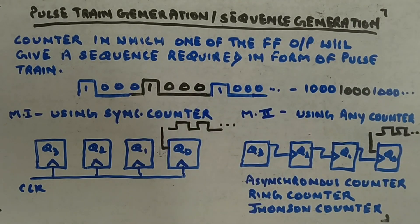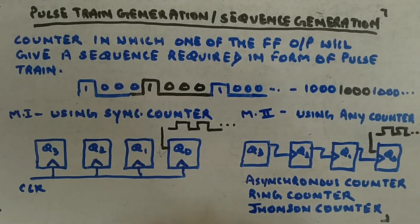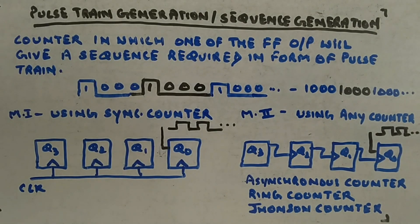We will go one by one. First we will look at Method 1 using synchronous counters, since we are currently working with those. Then I'll give you an easier technique — Method 2 — where you can use any counter with some combinational circuit to design whatever sequence is required.